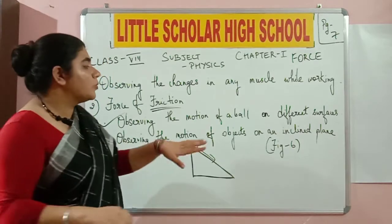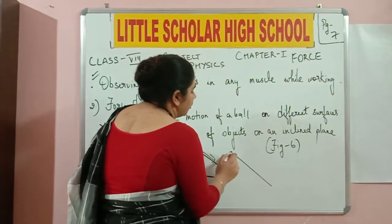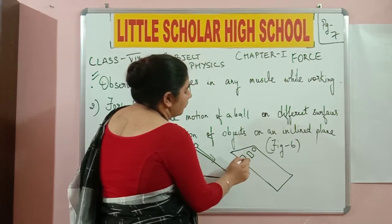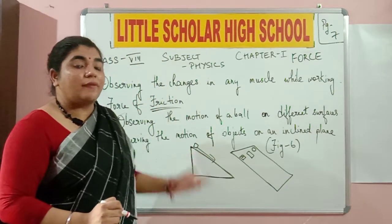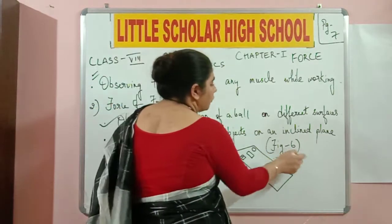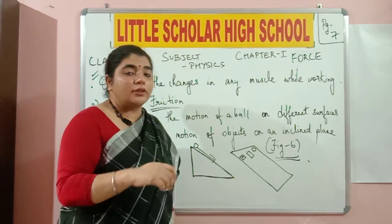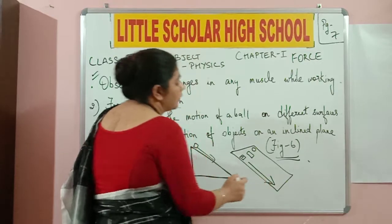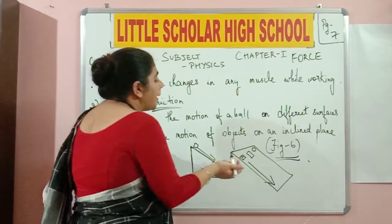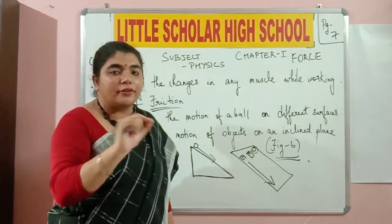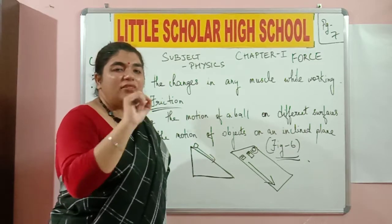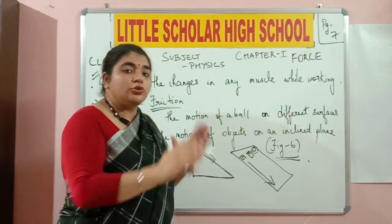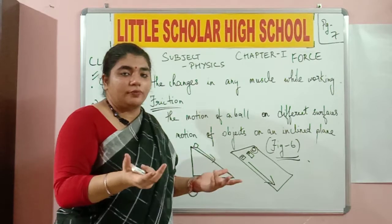Observing the motion of objects on an inclined plane — if I take a tray in an inclined position and place a coin, an eraser, and an ice cube, I need to observe which travels faster. This figure is in the textbook as figure number 6. The ice cube travels the fastest because it has the smoothest surface compared to the coin and the eraser. Conclusion: the smoother the surface, the more it travels; to stop it, the surface or object needs to be rougher.